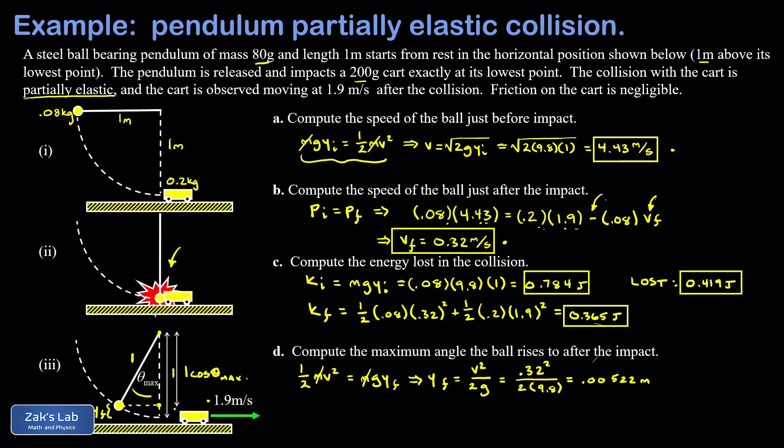So finally, I realize that that height Y final is just the missing chunk right here: one minus one cosine theta max, in other words, one minus cosine theta max. So Y final is one minus cosine theta max. I get cosine theta max is one minus Y final.